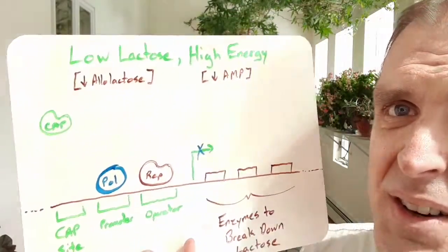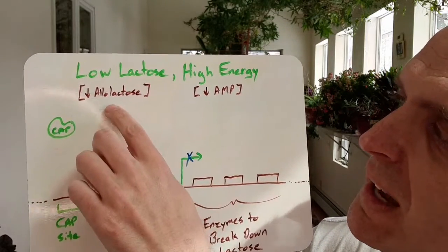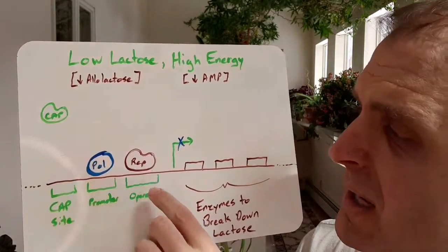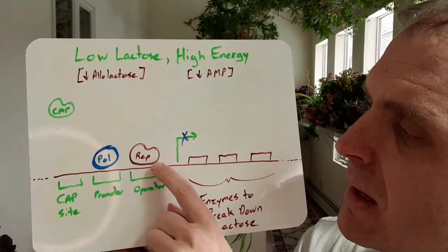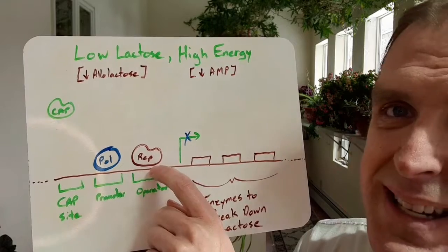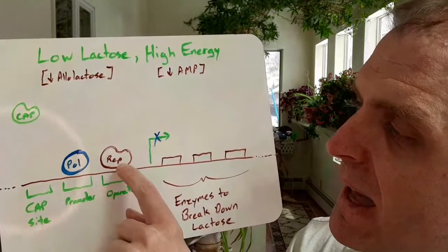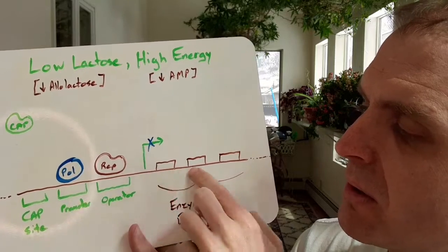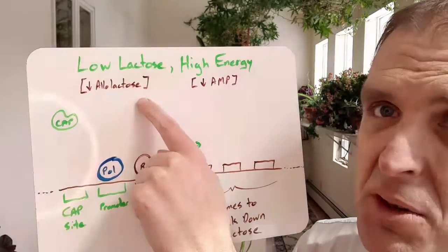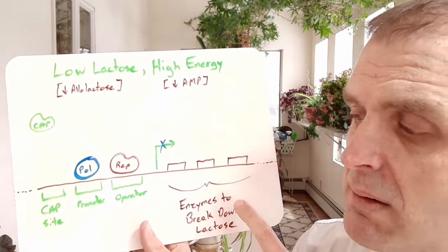And this is an example with high energy, with high energy and with low lactose. And so again, the repressor is going to be bound because it sticks when it doesn't have allolactose stuck to it, and it's going to block the polymerase. You don't get transcription because why would you? If you don't have lactose, why make the enzymes to break down lactose?